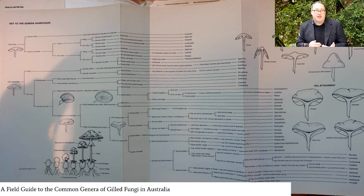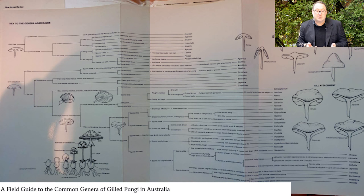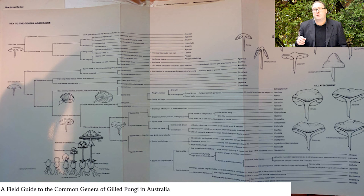Returning to keys — I've mentioned a variety of different features: gill attachment, cap shape, and spore colour. Looking closely at this slide, you can see the stepwise process — looking to see whether gills are free or attached, what spore colour a mushroom has, and so on. You can step down through these choices to hopefully get to the genus of the mushroom that you've found.